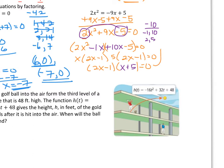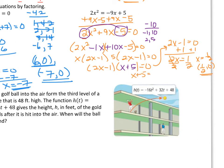Let's solve by applying the zero product property. Setting 2x minus 1 equal to 0, we add 1 first and then divide by 2, giving x equals one half, or the ordered pair one half comma 0. Setting x plus 5 equal to 0 and subtracting 5 gives x equals negative 5, or as an ordered pair, negative 5 comma 0. Those would be your x-intercepts or zeros of that quadratic function.